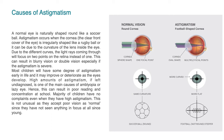Hence, this can result in poor reading and concentration at school. Majority of children have no complaints even when they have high astigmatism. This is not unusual as they accept poor vision as normal, since they have not seen anything in focus at all since young.